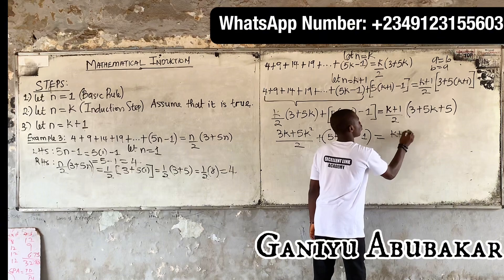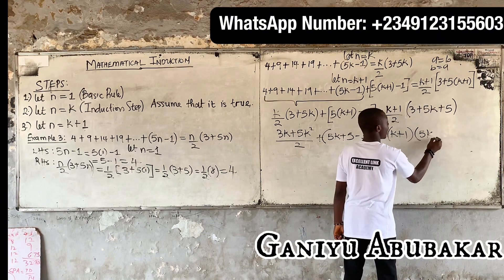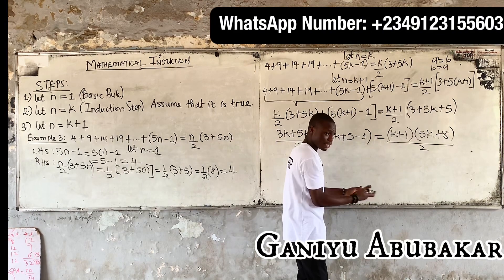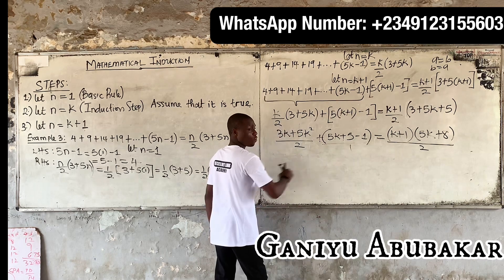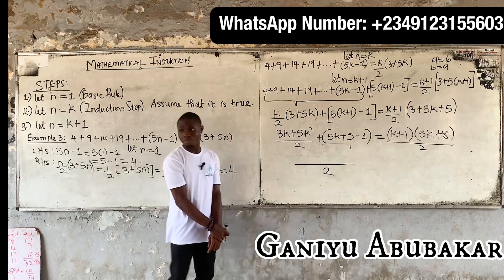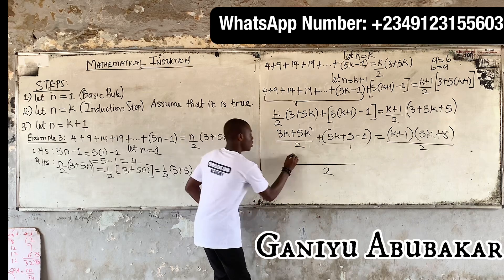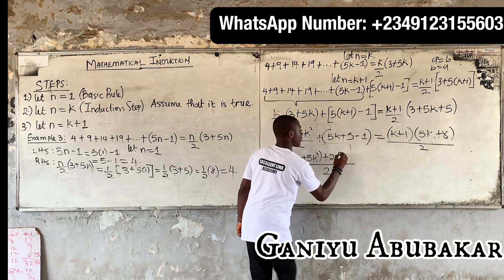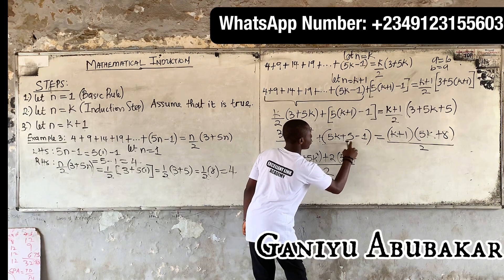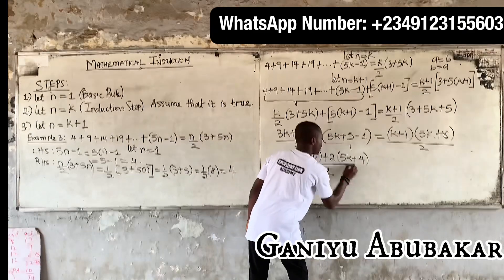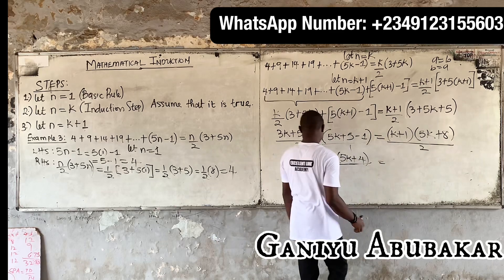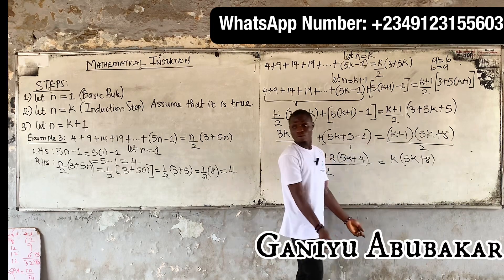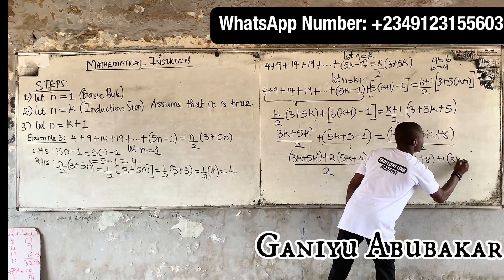Bring it down: k plus one times five k plus eight, over two. So these two expressions are becoming the same. Taking the LCM, which is two, I have: two into three k plus five k squared, plus two into five k plus four minus five. That simplifies. Factoring out: k times five k plus eight, plus one times five k plus eight.